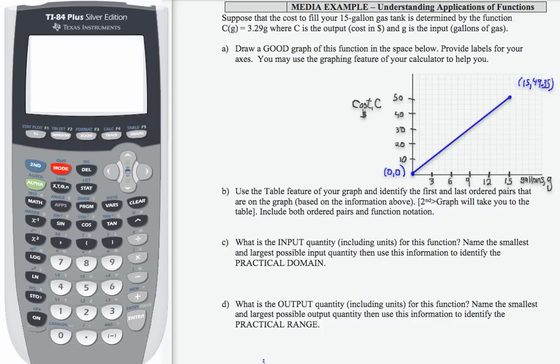So I use my graphing calculator to help me with this one. I go to Y equals, clear out what's there and enter 3.29X instead of G. I'm going to go to my window and I'm going to limit my window to my possible inputs for gallons of gas, which in this case would be 0 to 15 because I'm told that my tank is 15 gallons in size.